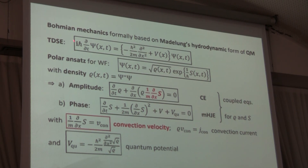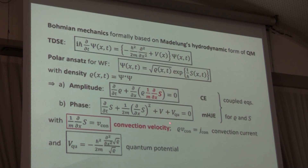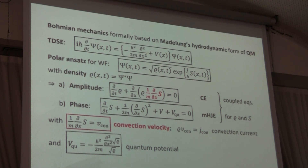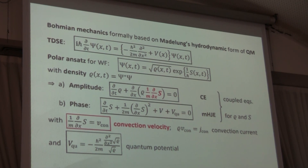In the following, we will concentrate on this continuity equation for the density, where you have this velocity field, which is a kind of conventional velocity. And this is the basis for the definition of the so-called quantum trajectories.